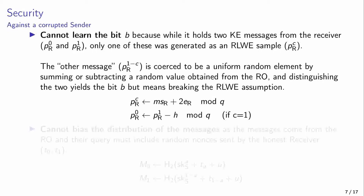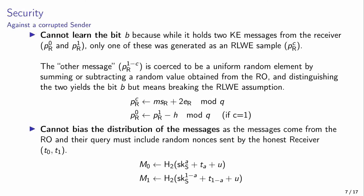Knowing B requires knowing C, as B equals A XOR C. Moreover, the malicious sender cannot bias the distribution of the messages, as they come from the random oracle, and the query must include the random messages T0 and T1, sent by the honest receiver in the end of the protocol.